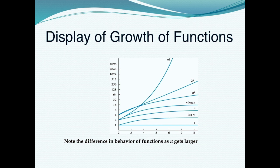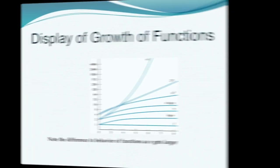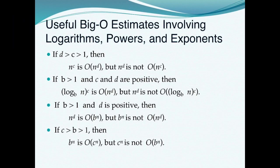Exponential growth is even more dangerous. A program with complexity 2^1000 processing just 1000 elements would need years to finish execution. This is what we mean by the growth of a function. For exams, you should use the computer science approach: employ the definition and describe the worst-case scenario for any loop or program to finish execution.